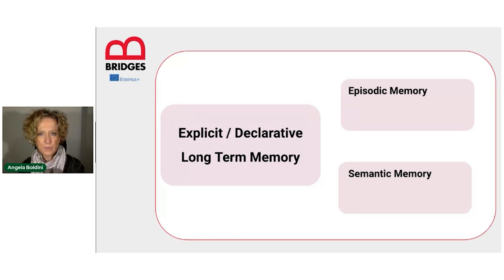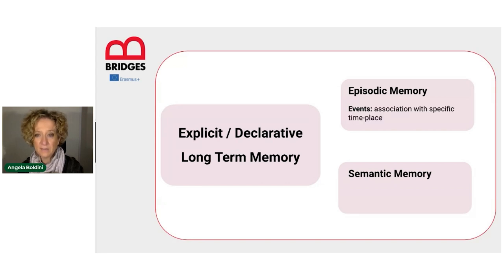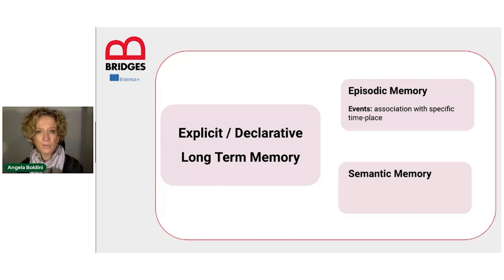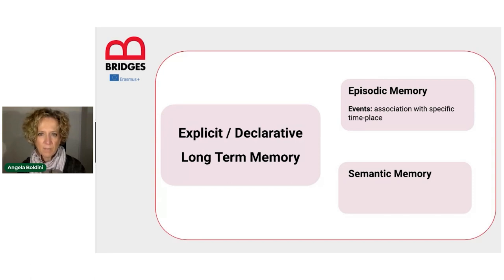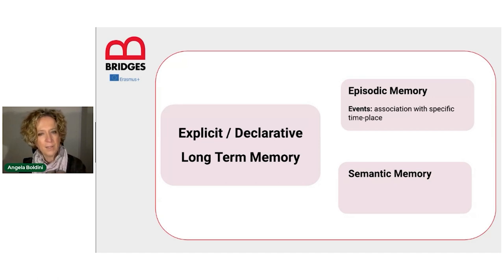Explicit memory is further divided into episodic and semantic memory. Episodic memory is memory for events regarding our personal life or events that happen in the world in general. The main feature of episodic memory is that they are associated with specific details of time and space. For example, remembering that last year in May there was a big scientific conference in London, or that I went to a big scientific conference in London — these are both examples of episodic memory.